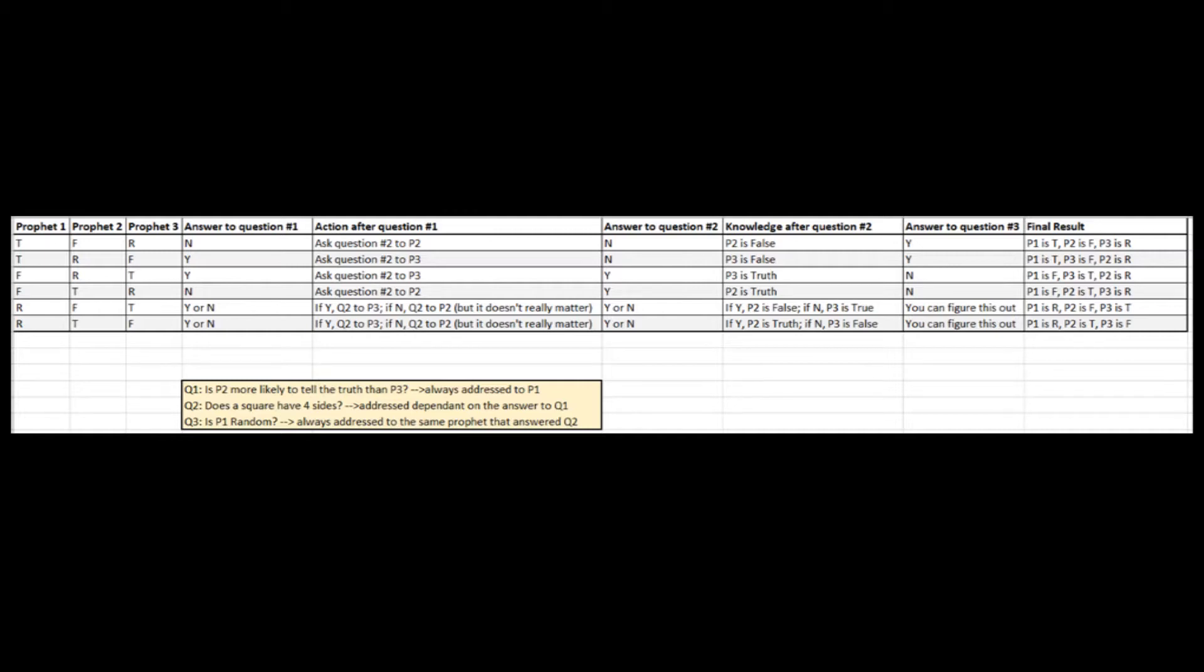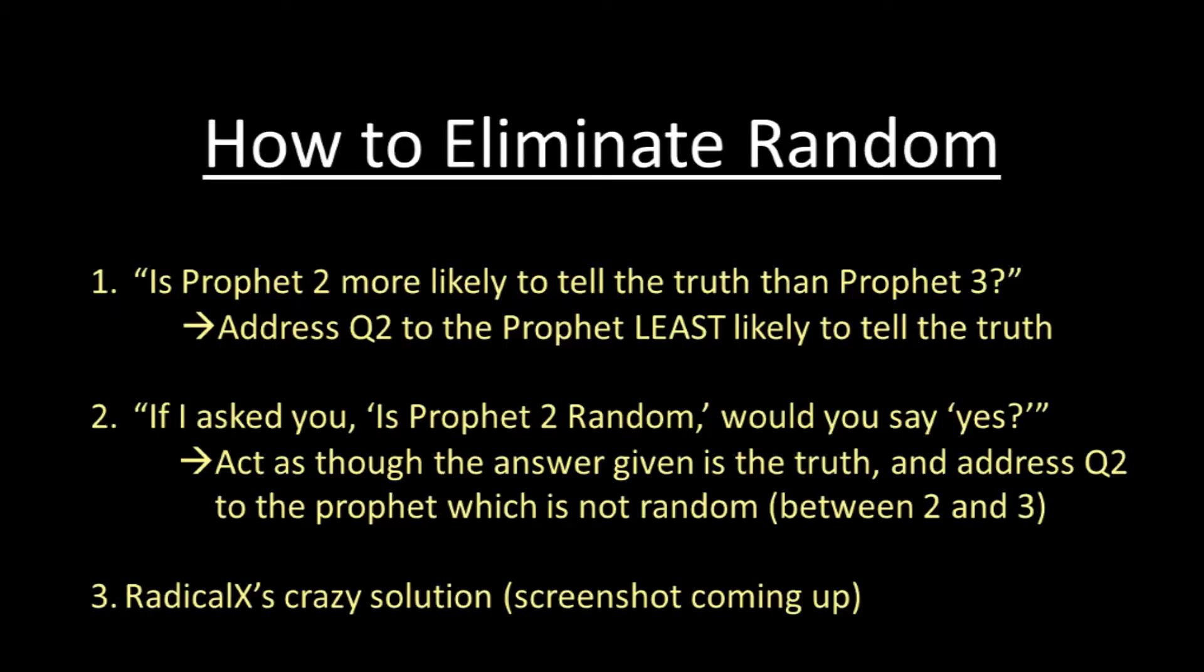Question two and three are the same for every solution. There are, however, a few different ways of eliminating Random. The most common that I've seen is the same as used in the TedEd video. What you say here is, 'If I asked you, is that guy Random, would you say yes?' In this scenario, both Truth and False say the same thing. If they say yes, address question two to the other guy. If they say no, address question two to him. Truth is straightforward, and False lies about lying, effectively telling the truth. And again, if you're talking to Random, the answer doesn't matter, because the next question won't be addressed to him. So following the same procedure still works.